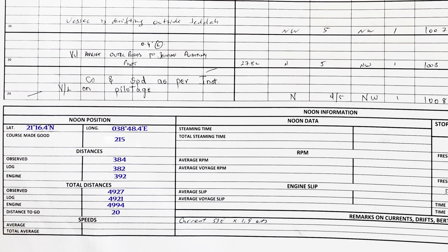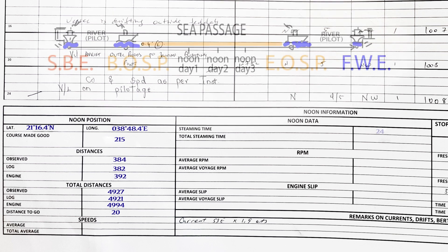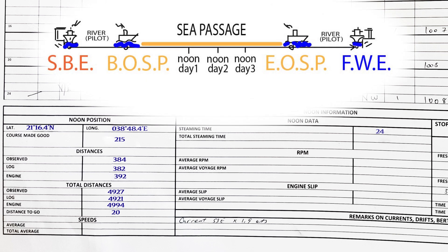Distance to go and distance to pilot are also noted. Steaming time is the time the vessel has traveled from stand-by engine at berth to noon, and then from noon to noon. The second officer may separate the river time and sea time for convenience. Total steaming time is the time traveled from stand-by engine at berth to present noon.